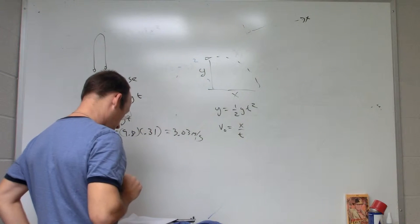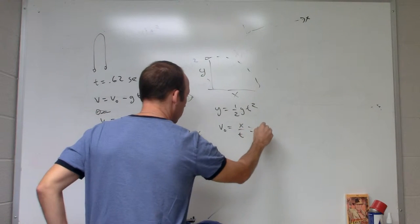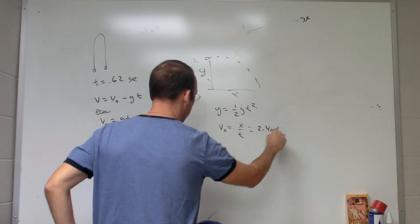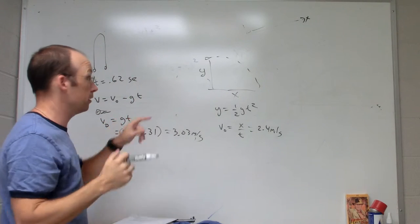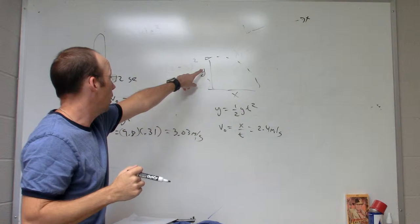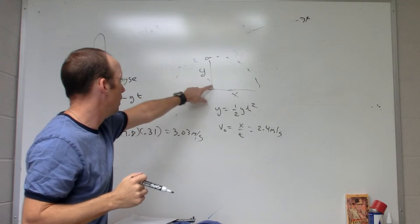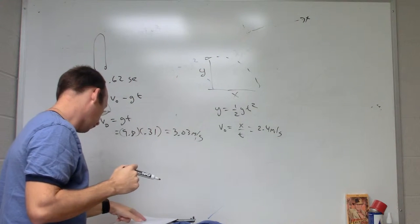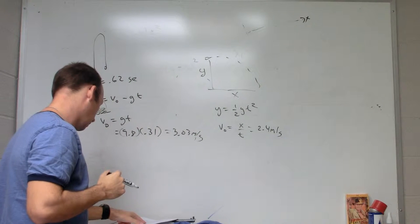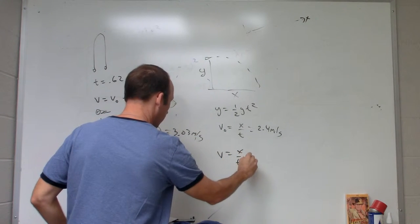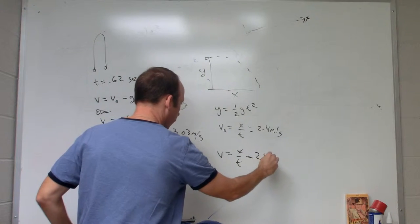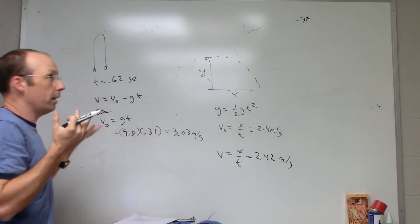Solving for t from there, when you do that you get 2.4 meters per second. In the last case, it's the same idea but different measurements where you measure x and time of 0.31 seconds, and you get the velocity of just v equals x over t, and you get 2.42 meters per second.